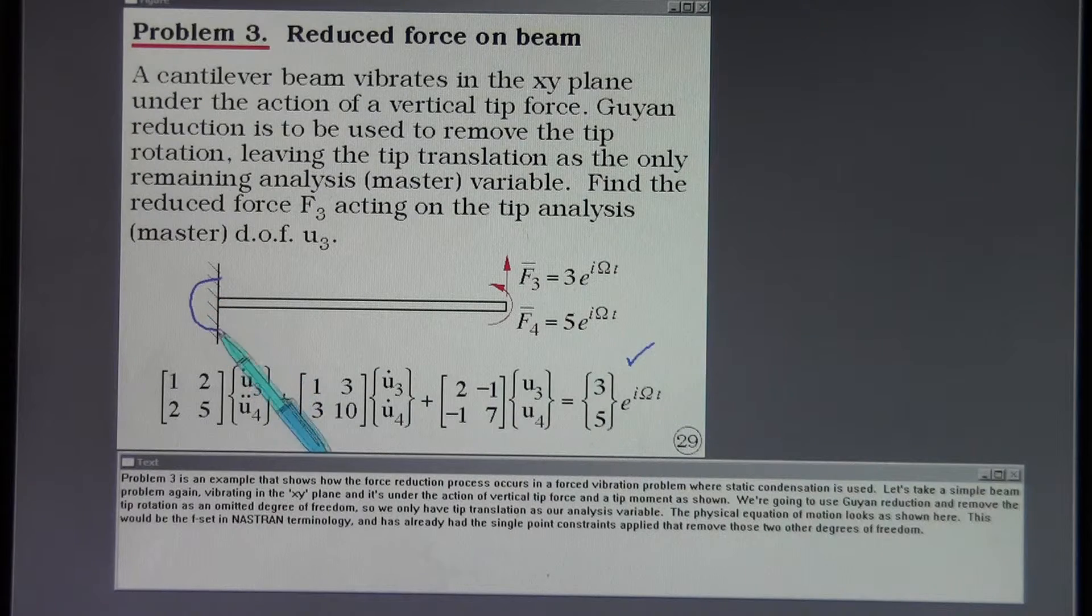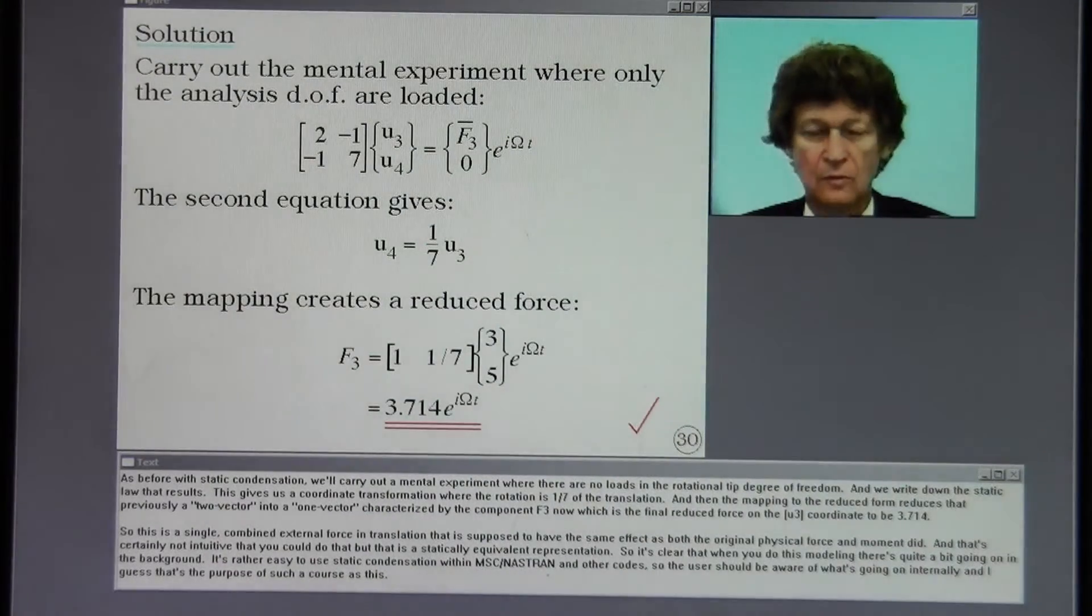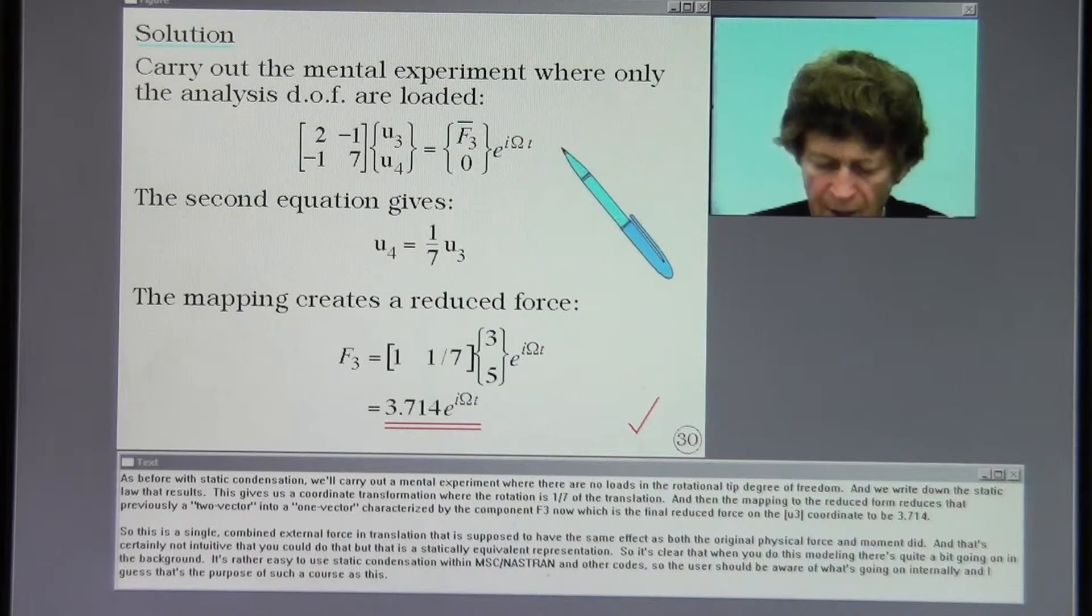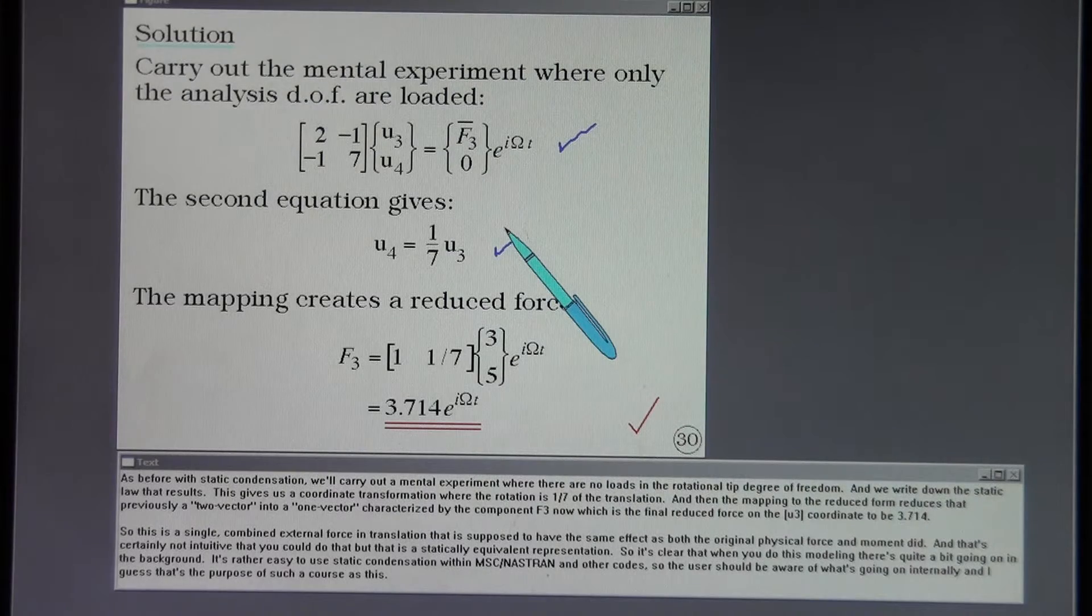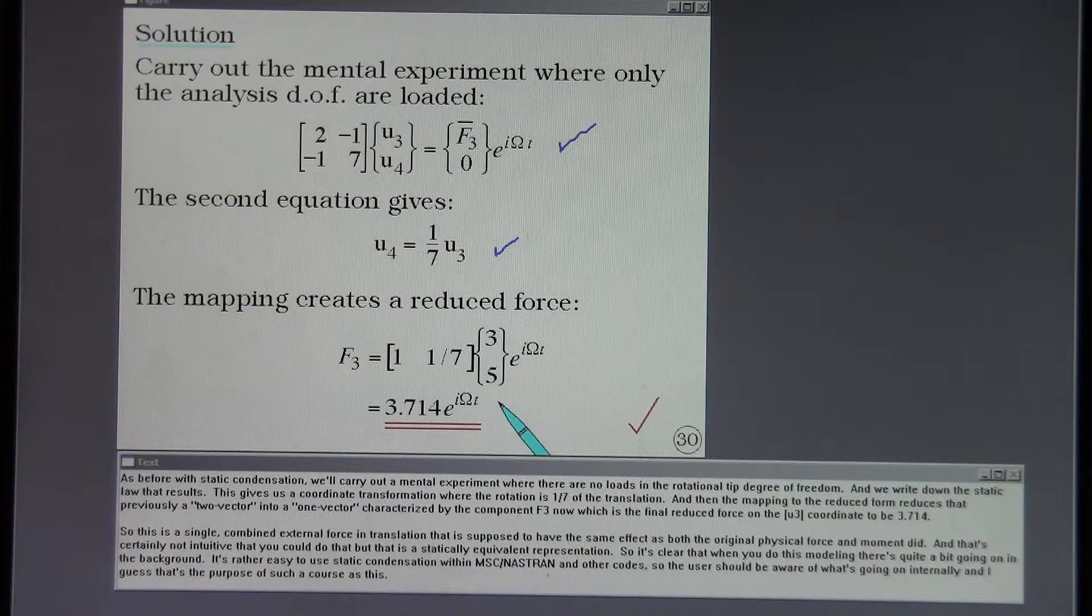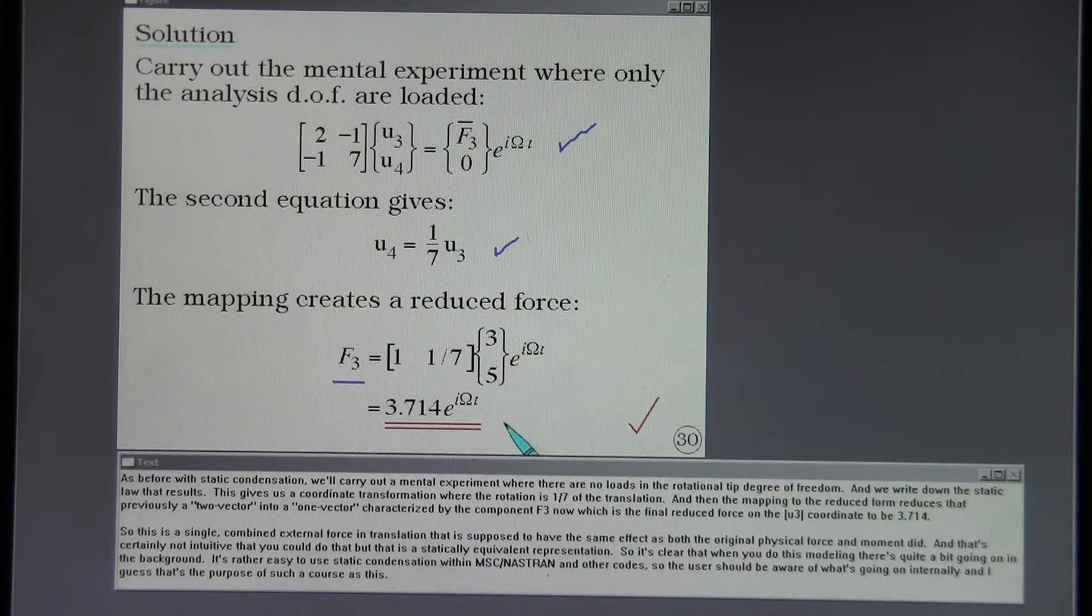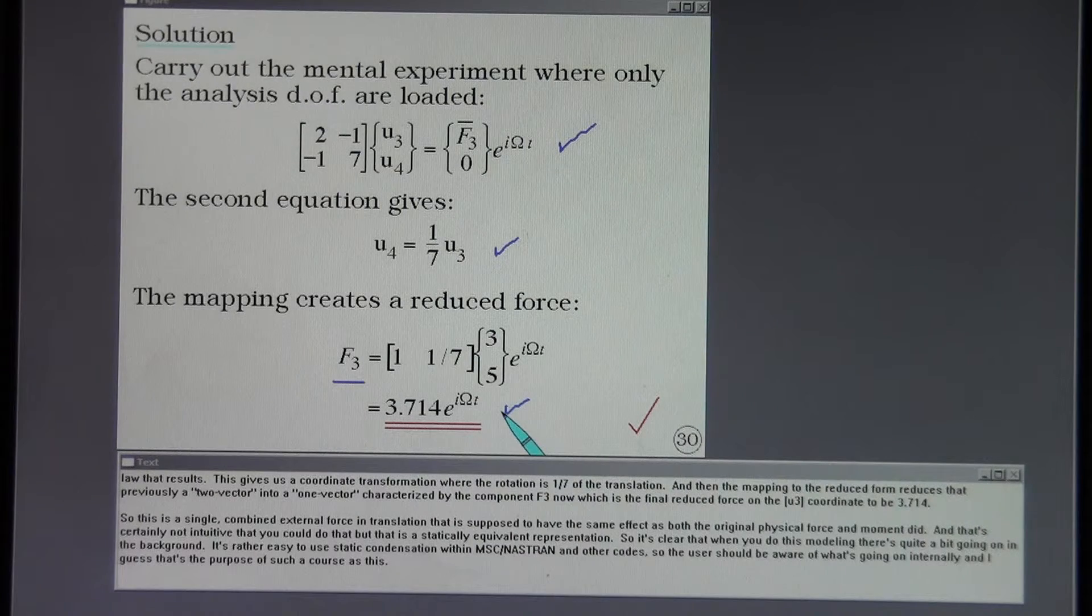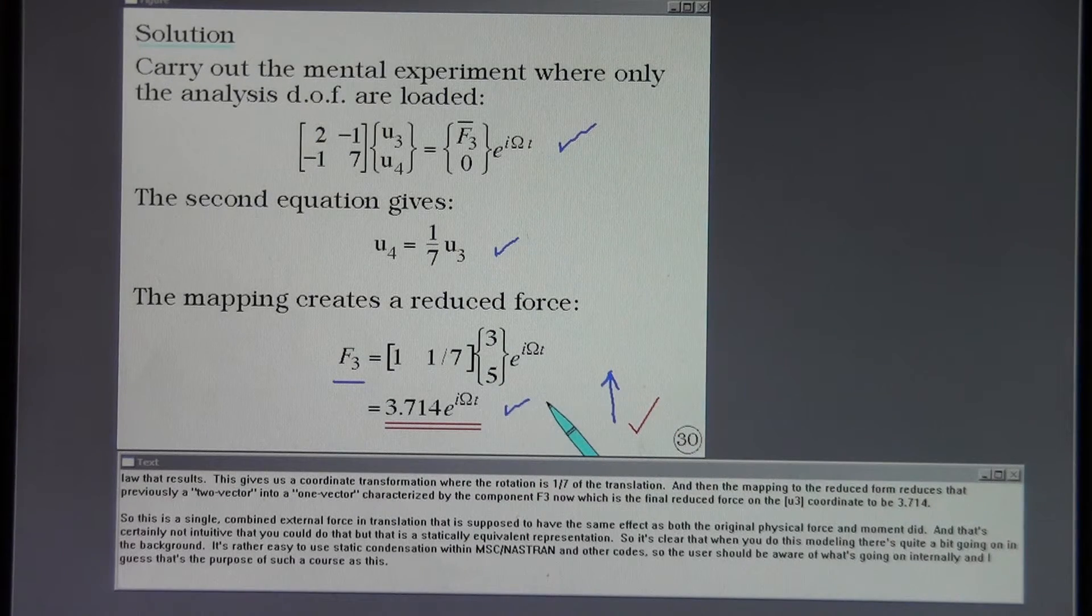As before with static condensation we'll carry out a mental experiment where there are no loads in the rotational tip degree of freedom. And we write down the static law that results. This gives us a coordinate transformation where the rotation is one-seventh of the translation. And then the mapping to the reduced form reduces that previously a two-vector into a one-vector characterized by the component F3 now, which is the final reduced force on the F3 coordinate to be 3.714.